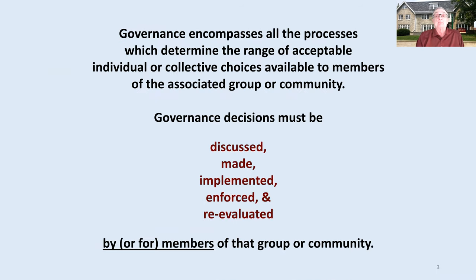I will highlight a few of the key books for each example, and a complete reference list should be available on the Ostrom Workshop website near where this video is located. To recap the first video, I'll briefly review my preferred definition of governance and a short list of the generic tasks that any effective system of governance must accomplish. Governance encompasses all of the processes which determine the range of acceptable individual or collective choices available to members of the associated group or community. In addition, governance decisions must be discussed, made, implemented, enforced, and re-evaluated by or for members of that relevant community.